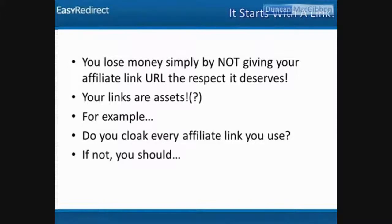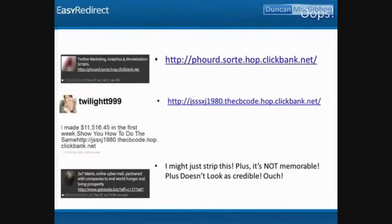If you don't do it now, you should. I'm going to show you specific ways of doing it, because not all link cloaking methods are equal. Let me give an example. I see this all the time on Twitter — people are tweeting and trying to make an honest buck online. For example: 'Twitter marketing graphic and monetization — go here.' We all recognize that as a ClickBank link. What does 'phrd' mean? What is that?